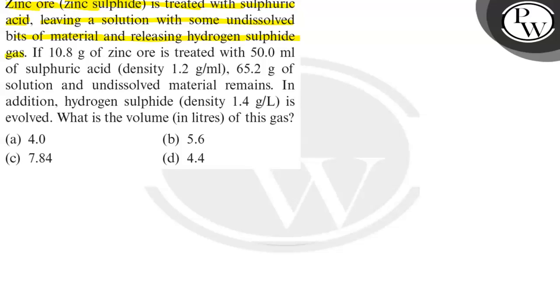When zinc sulfide reacts with sulfuric acid, hydrogen sulfide gas is released. If 10.8 grams of zinc ore is treated with 50 ml of sulfuric acid, the amounts are given.